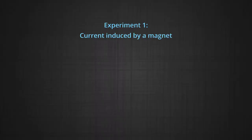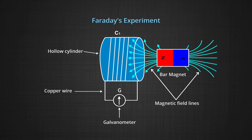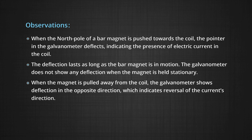We shall now discuss some of the experiments carried out by Faraday and Henry. Experiment 1: Current induced by a magnet. Let us take a coil C1 connected to a galvanometer G as shown in the figure. Normally, the meter would not deflect as there is no source of EMF. We also have a bar magnet which can be moved in and out of the coil. We observe that when the north pole of a bar magnet is pushed towards the coil, the pointer in the galvanometer deflects, indicating the presence of electric current in the coil. The deflection lasts as long as the bar magnet is in motion.